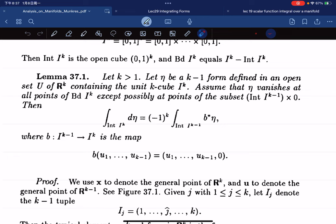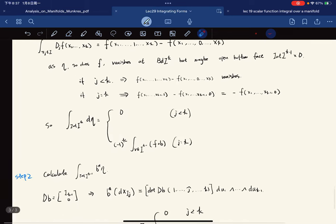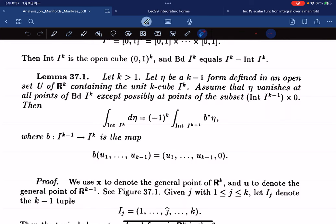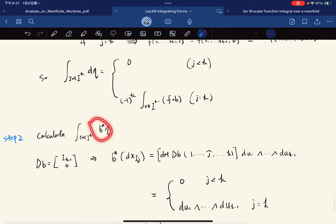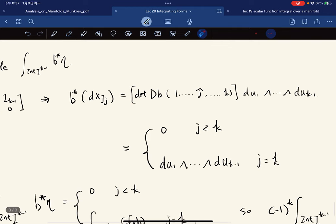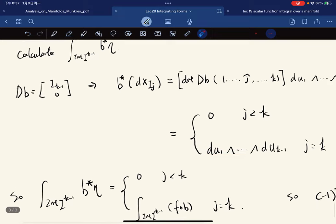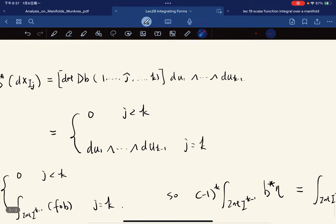Now we calculate this side: b* d η. We have a formula to compute those, and you observe the determinants. It's zero if j is less than k, and equals this if j equals k. This thing equals 1 because the matrix looks like this if j equals k.